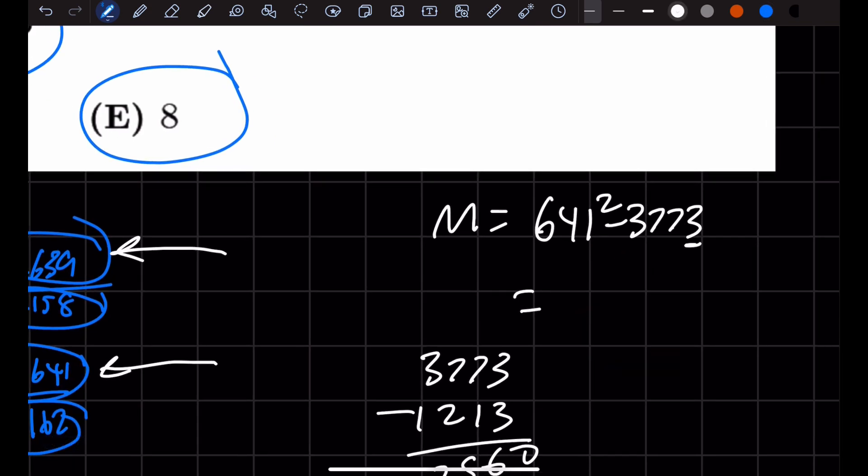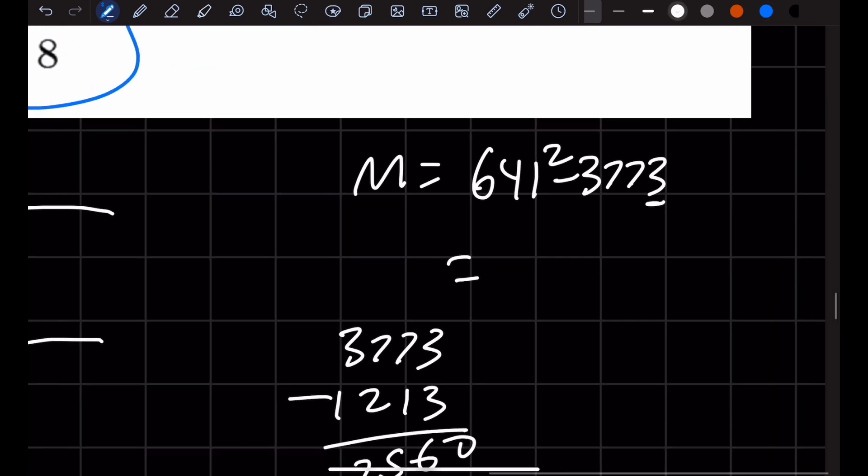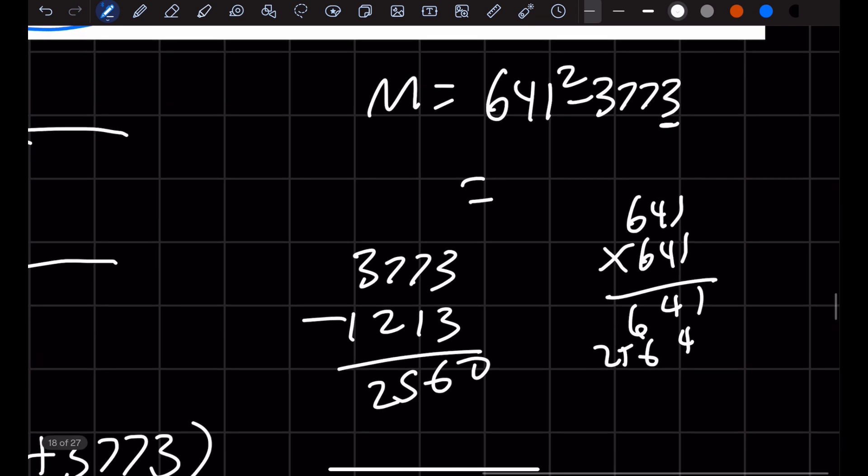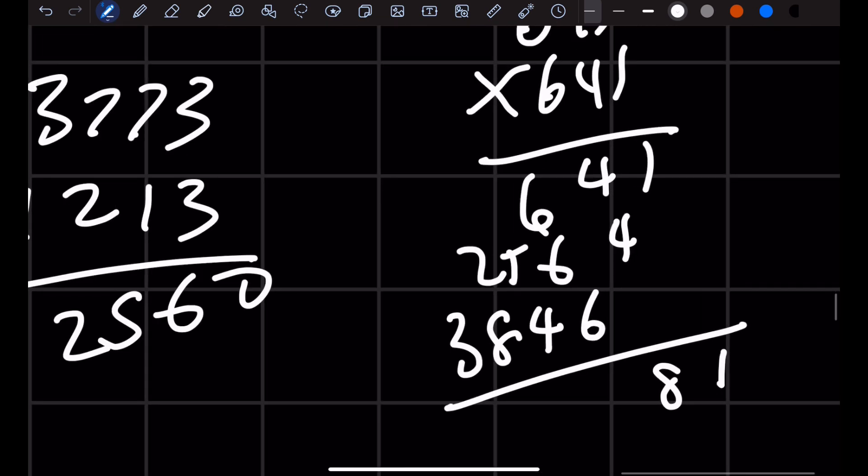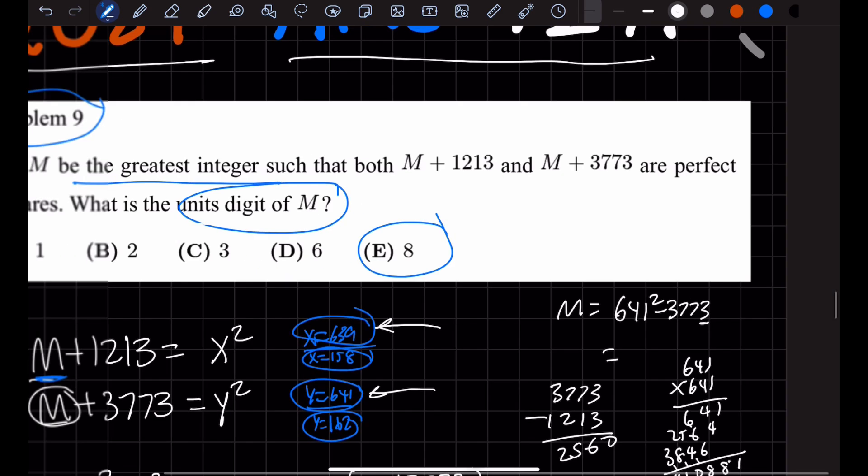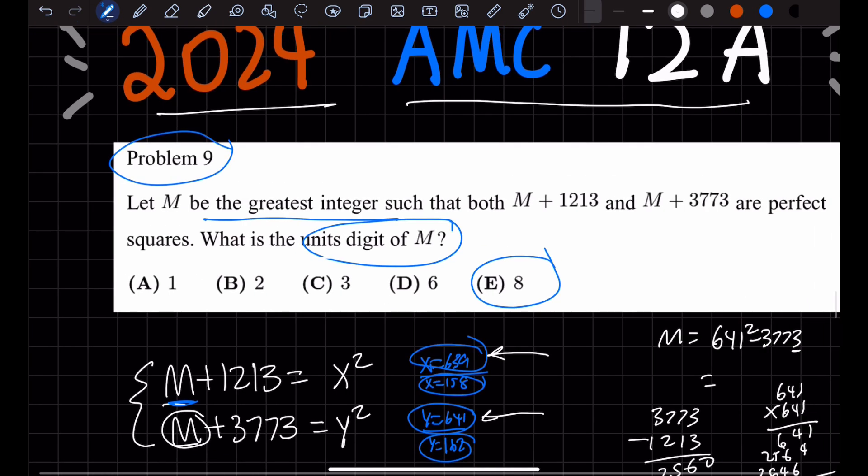If you can't see that, you can do the full calculation. 641 times 641 gives 410,881. Then you subtract 3,773, and you'll see that the last digit is 8. So we can be confident the answer is E.